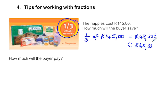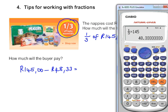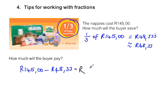How much will the buyer pay? Well, that is what he's getting off. So how much will we pay? It's going to be 145 Rand minus 48,33 equals, get your calculator. So now we have 145 minus 48,33 and the answer is 96 Rand and 67 cents. So that is what the buyer will pay.